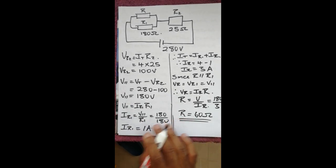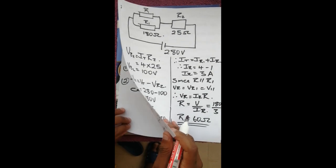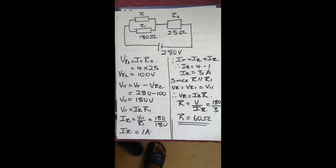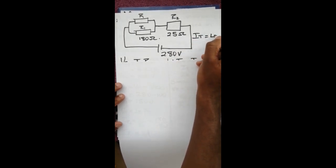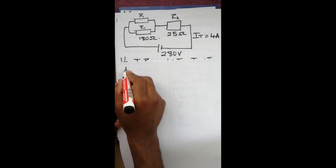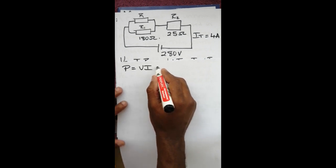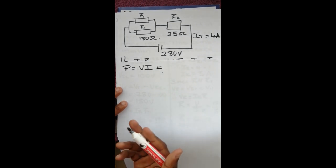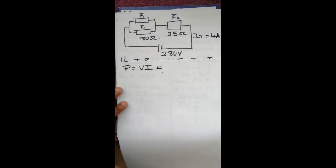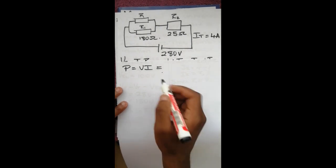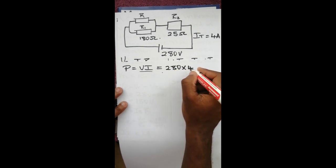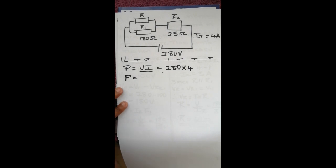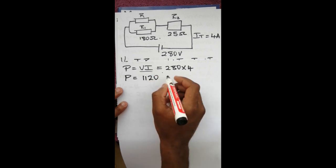That's it for the first question. The second question is to calculate the power dissipated. We know that I_T equals 4 amps. Power P equals V times I — you can also use I squared R or V squared over R. In this case, since we have I_total and V_total, we plug in 280 times 4. Therefore P equals 1120 watts.